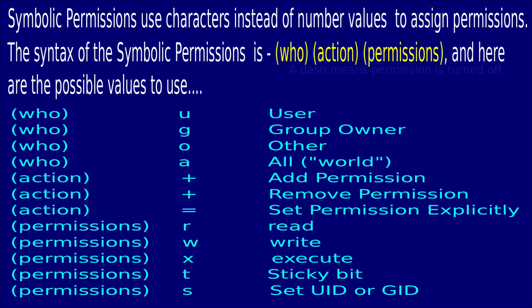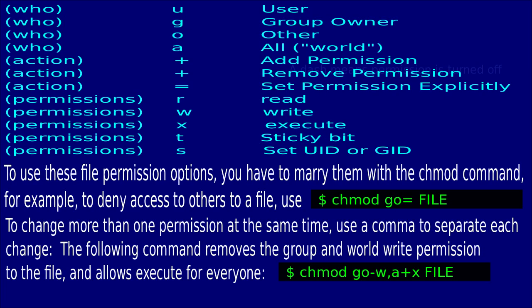Symbolic permissions use characters instead of number values to assign permissions. The syntax of symbolic permissions is: who, action, and permission. Here are all the possible values to use. To use these file permission options, you have to marry them with the chmod command. For example, to deny access to others to a file, use chmod go= followed by the filename. And to change more than one permission at the same time, use a comma to separate each change. The following command removes the group and world write permissions and allows execute for everyone.